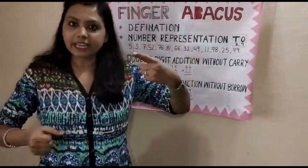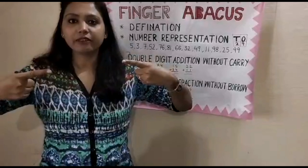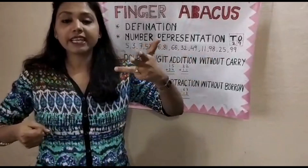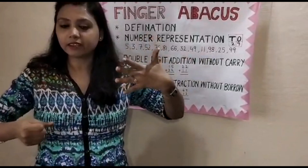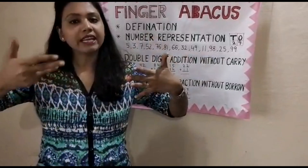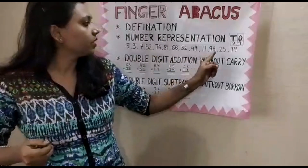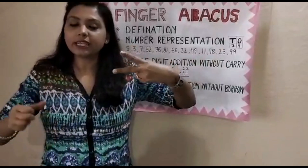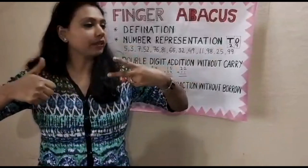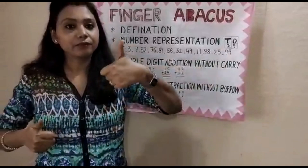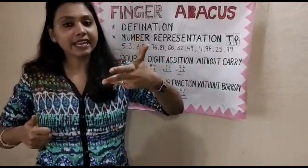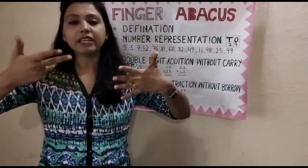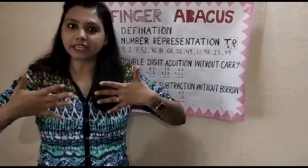For 11: left hand shows 10 plus right hand shows 1 — that's 11. For 98: left hand shows 50 plus 60, 70, 80, 90, and right hand shows 5, 6, 7, 8 — that's 98. For 25: left hand shows 10, 20, and right hand shows 5 — that's 25. For 99: left hand shows 50 plus 60, 70, 80, 90, and right hand shows 5, 6, 7, 8, 9 — that's 99.